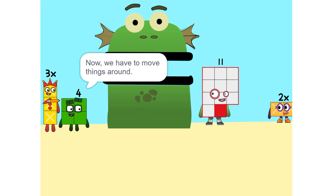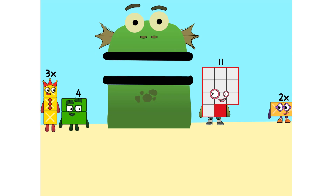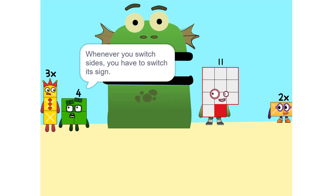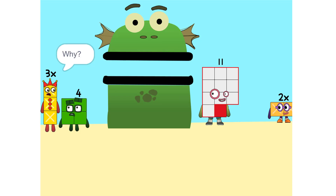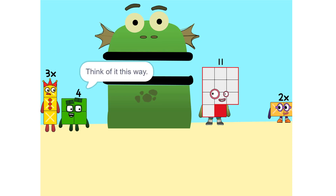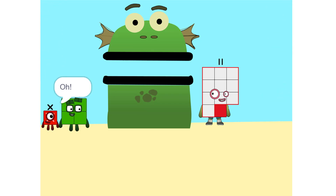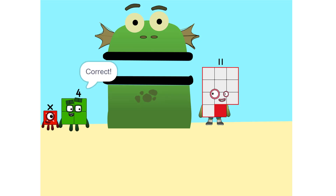Now we have to move things around. We have to move this 2x to this side. So: 5x. Whenever you switch sides, you have to switch its sign. So if it's positive, it becomes negative and vice versa. Why? Think of it this way — you're subtracting 2x from each side. So it'd just be 1x, or x. Correct.